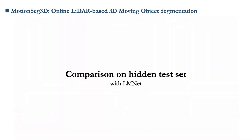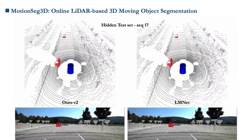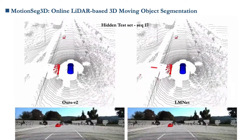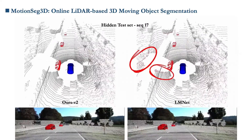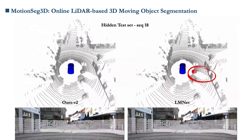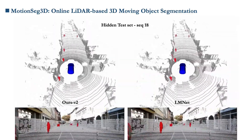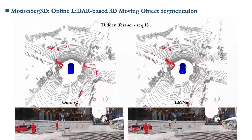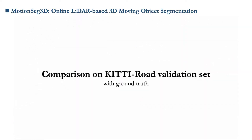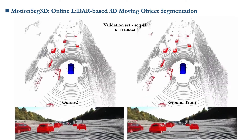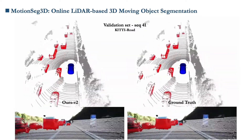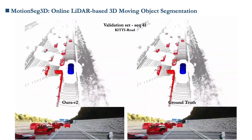On the test set, LMNet still has many blurred boundaries around objects with many false positive predictions, while our method segments accurately at object boundaries. In sequence 18, LMNet produces a large number of mispredictions and blurred boundaries, and most of the cars shown are parked. We also provide results on the newly annotated KITTY Road dataset — excessive speed and occlusion are still areas for improvement, but segmentation of most cars is very accurate.